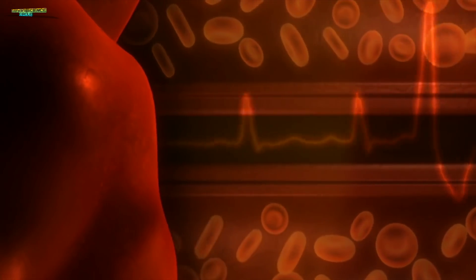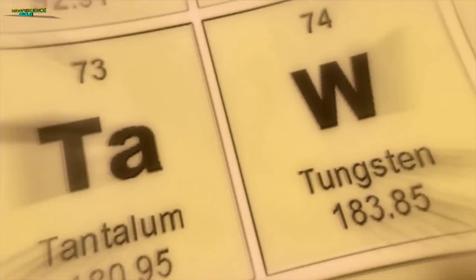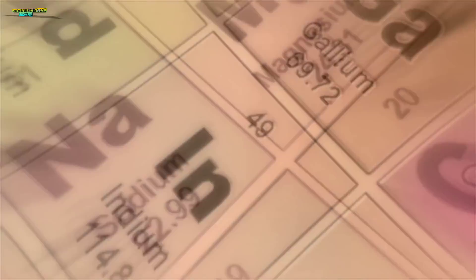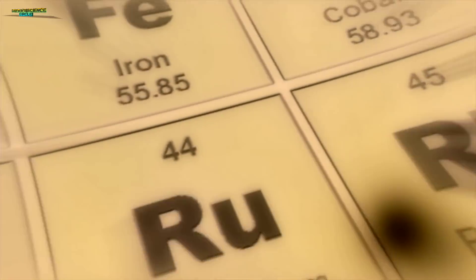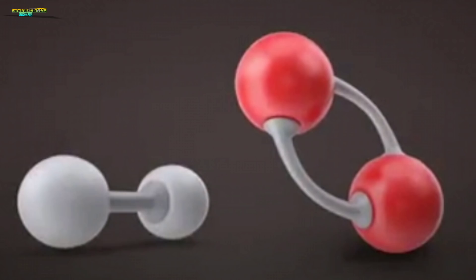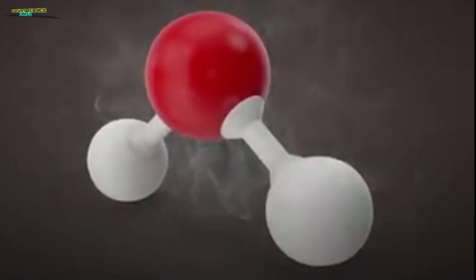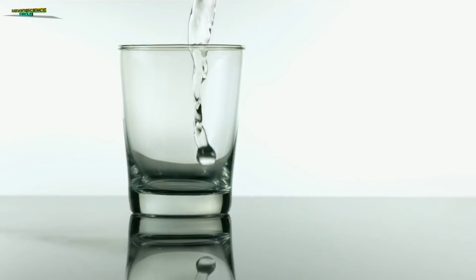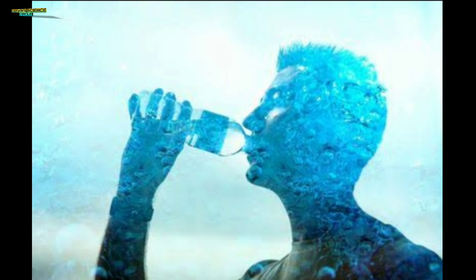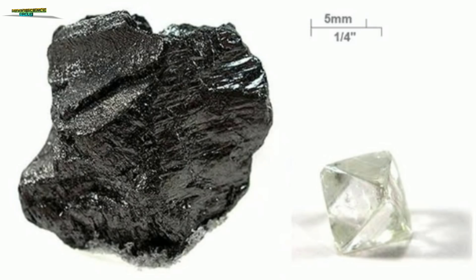In our body, there are many chemical elements from the periodic table. But the most abundant are oxygen and hydrogen, which combine as H2O - water. After oxygen and hydrogen, the next is carbon.